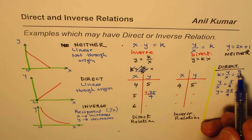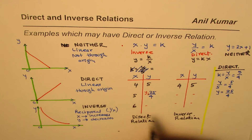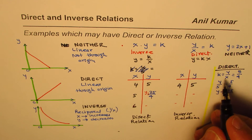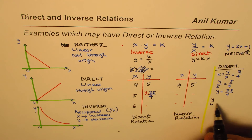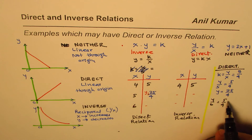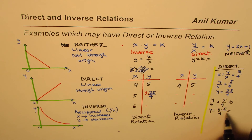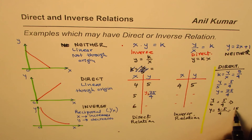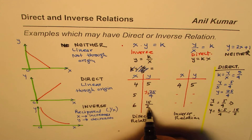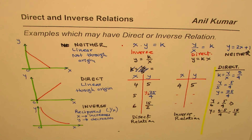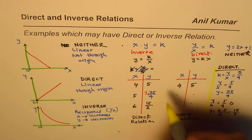For x equals 6 in the direct relation, we set y over 6 equal to 5 over 4, then cross-multiply to get y equals 6 times 5 over 4, which is 30 over 4 or 15 over 2. So the y values to fill in the table for the direct relation are 25 over 4 and 15 over 2.